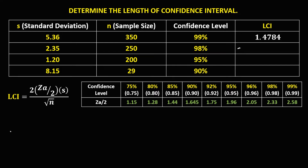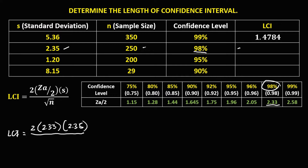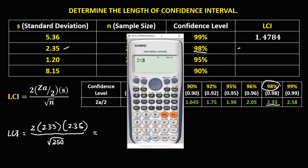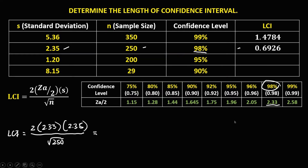For this given: the length of the confidence interval equals 2 times the confidence coefficient. Since the confidence level is 98%, the confidence coefficient is 2.33. Times the standard deviation, that's 2.35, over the square root of the sample size — square root of 250. Solving: 2 times 2.33 times 2.35, then divide by the square root of 250. The length of the confidence interval is 0.6926.